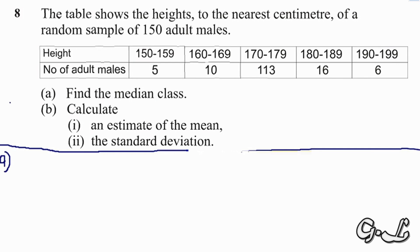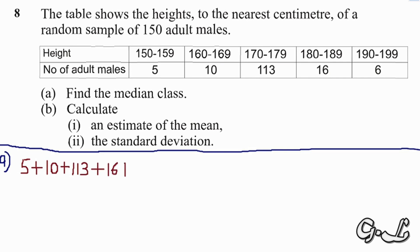The first thing we're going to do is add all the number of adult males. We have those in the height categories 150–159, 160–169, 170–179, 180–189, and 190–199. So we calculate 5 plus 10 plus 113 plus 16 plus 6. Since the question asks us to find the median class, we divide by 2, which gives us 75.